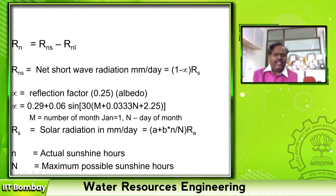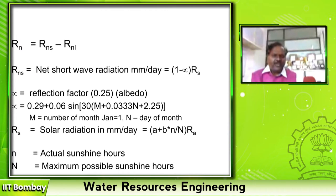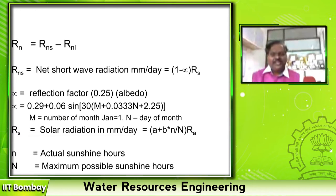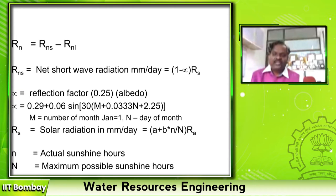RN is the difference between short wave radiation and long wave radiation. So it is 1 minus alpha, where alpha is called the reflection factor, which is a function of albedo. To do this manually itself needs a lot of time — that's why we used to write a code to estimate evapotranspiration. You can also try to write a small program which can later be developed into a software.